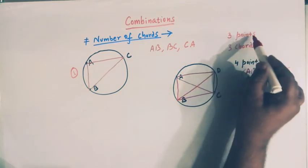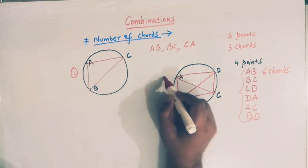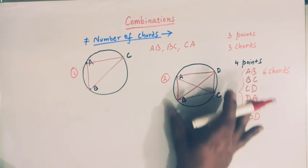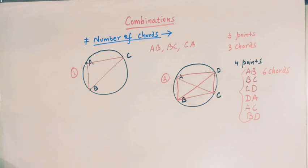We can see that in the first situation, when the number of points are three, we have three chords, and in situation two, when we have four points, the total number of chords are six. Now our aim is to find a formula for the total number of chords when there are n points given on the circumference of a circle.